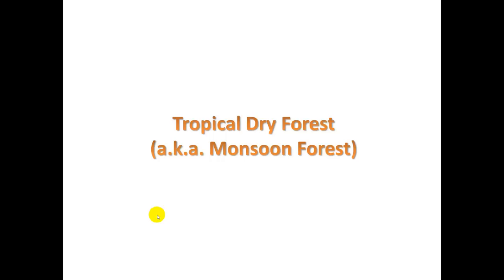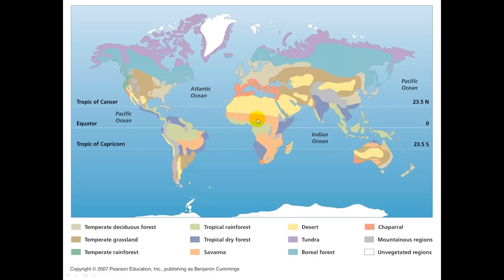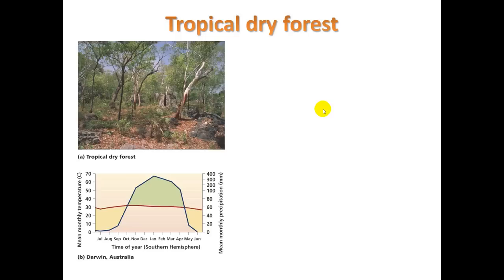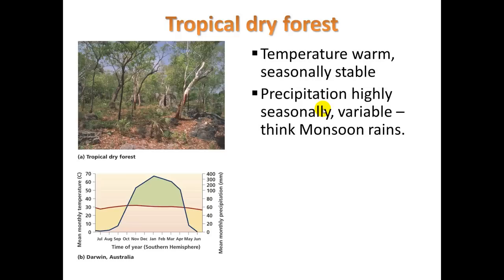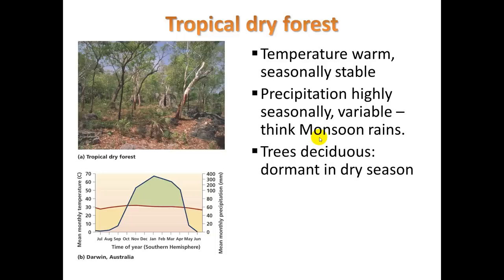Let's move to the tropical dry forest, also known as monsoon forest. We do have a lot of humans living in these areas. If you think about what countries are known for monsoon rains, India comes to mind. This continent of India is mostly considered tropical dry forest. It's warm but not a lot of rain — the precipitation is highly variable. You get intense monsoon rains that come in every year during the monsoon season. The trees are deciduous and dormant during the dry season, unlike our deciduous trees here in North America, which lose their leaves during cold winters. There's high biodiversity here as well.